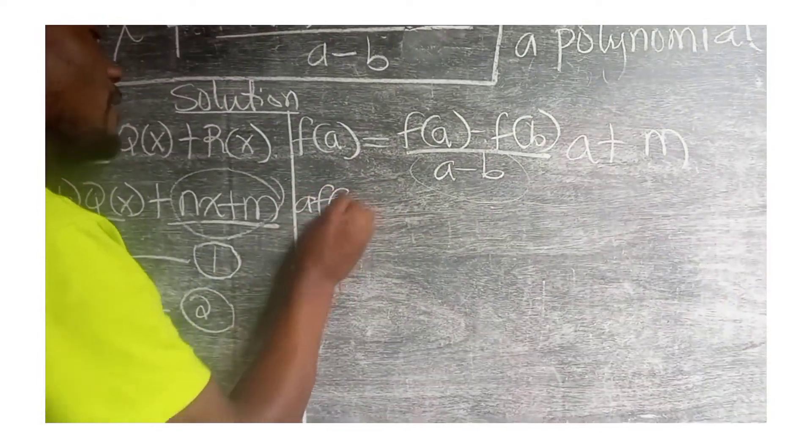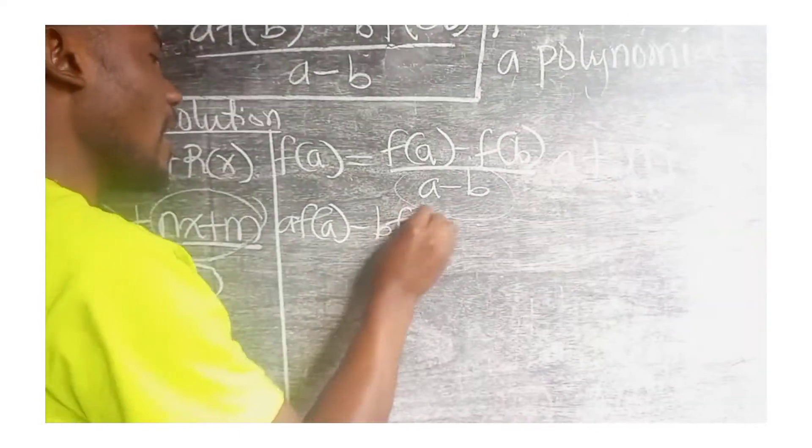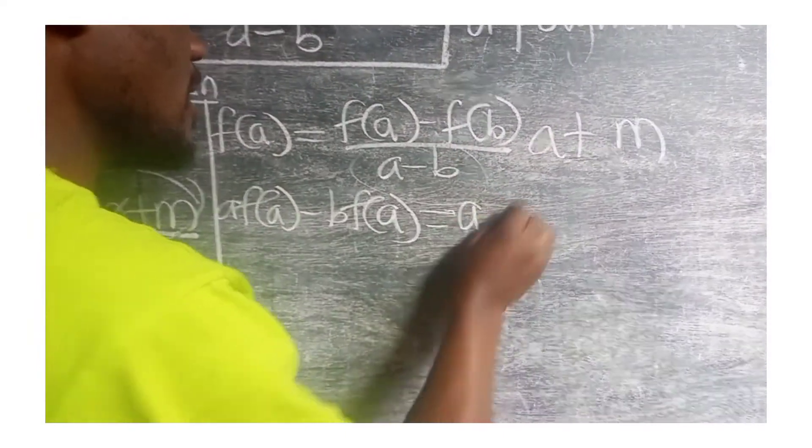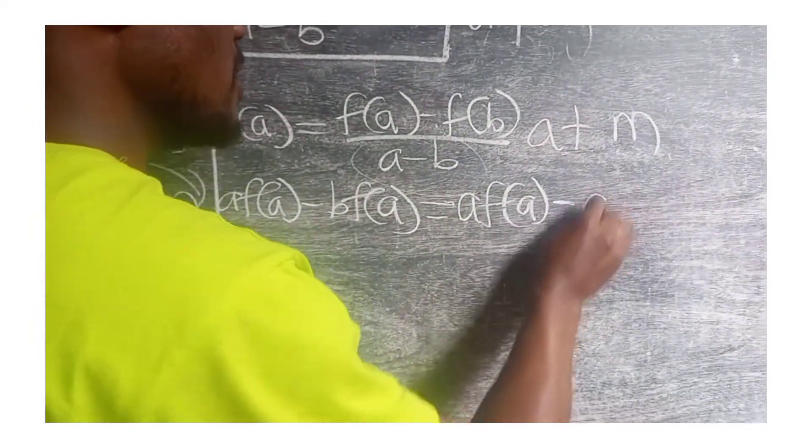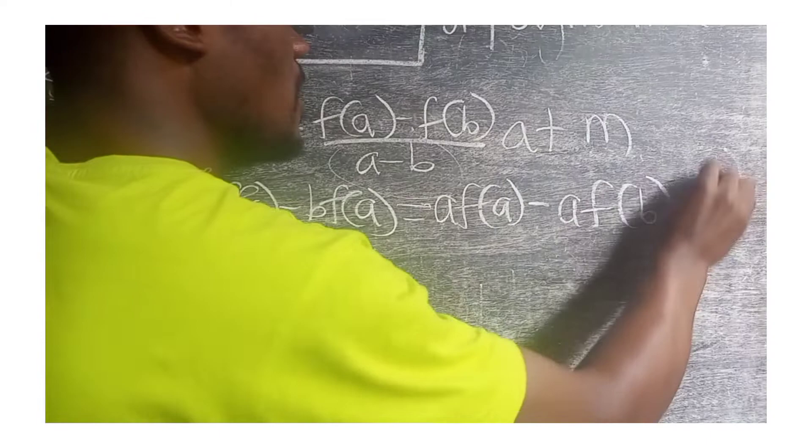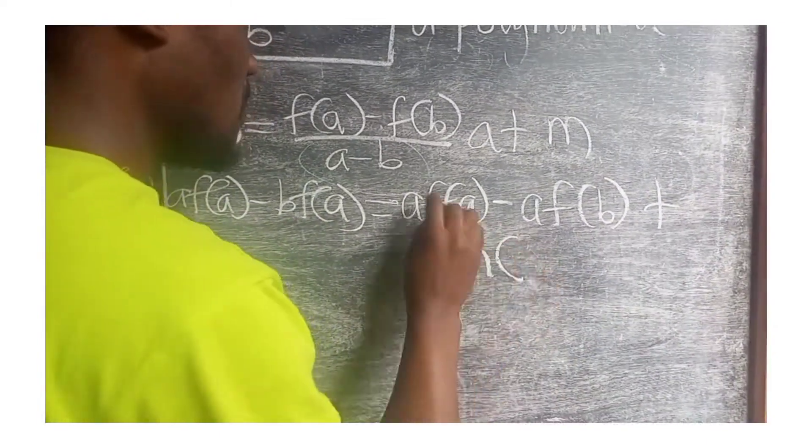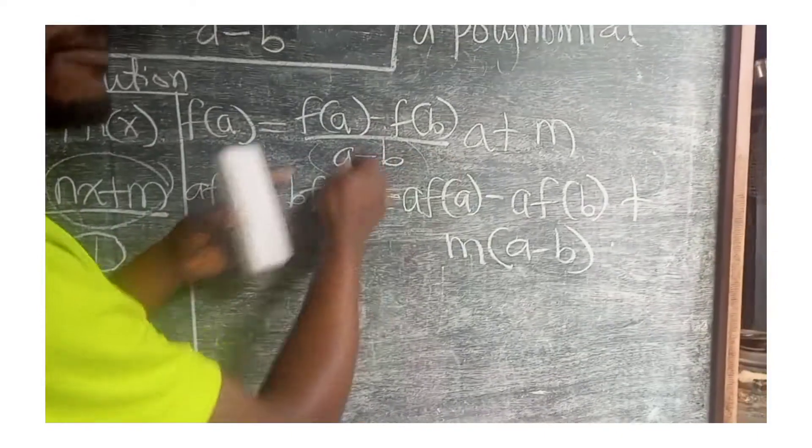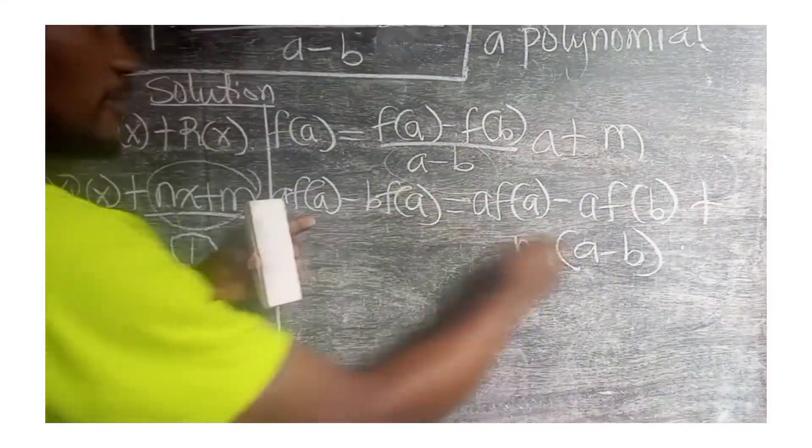So we are going to have (a-b)f(a) equal to f(a), this times this, a·f(a) - a·f(b) plus m times (a-b) by multiplying everything by a-b. We have this equation.